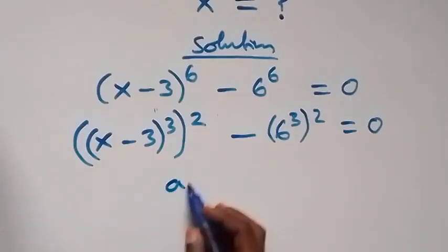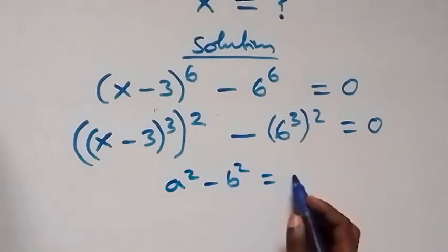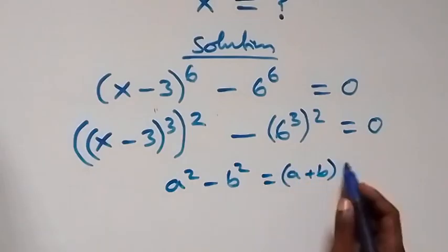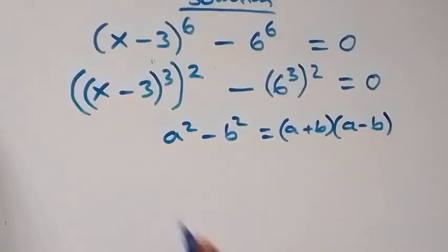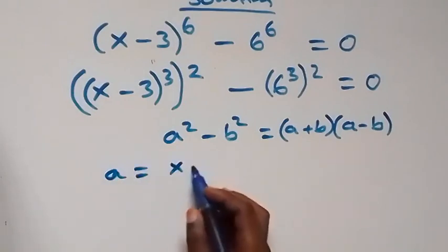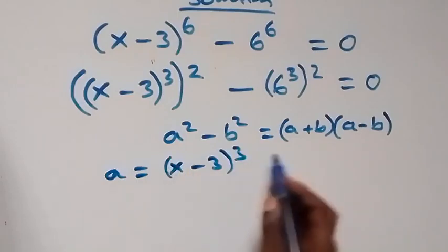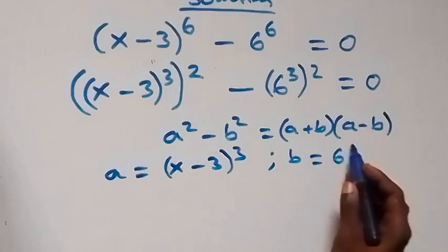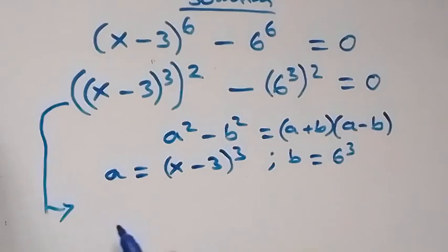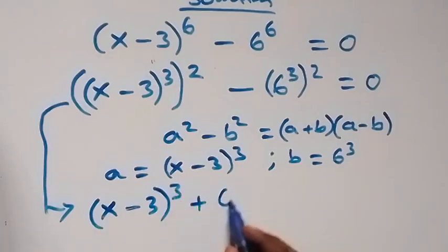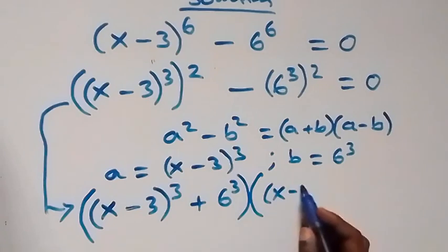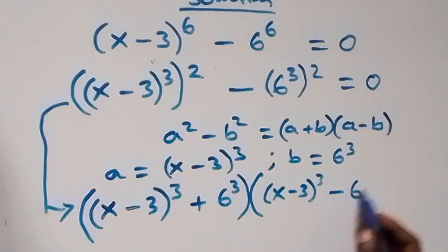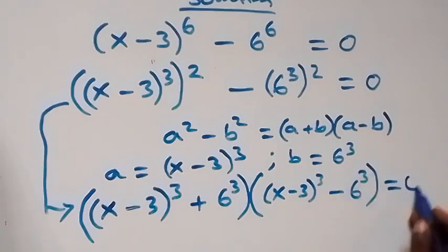Then we can rewrite this as (x minus 3) raised to power 3, raised to power 2, minus 6 raised to power 3, raised to power 2, equals to 0. This follows from a squared minus b squared, which is the same as (a + b)(a − b). So with a = (x−3)³ and b = 6³, this equation becomes [(x−3)³ + 6³][(x−3)³ − 6³] = 0.